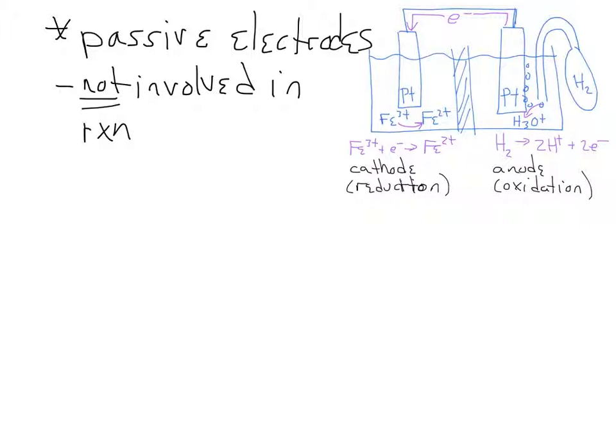In the previous example we had two active electrodes; in this example we have two passive electrodes. But you could build an electrochemical cell that has one active and one passive — for example, a platinum electrode combined with the iron 3+/iron 2+ solution on one side, coupled with a copper electrode in a copper ion solution on the other. Either way, you can have two active, two passive, or one of each.